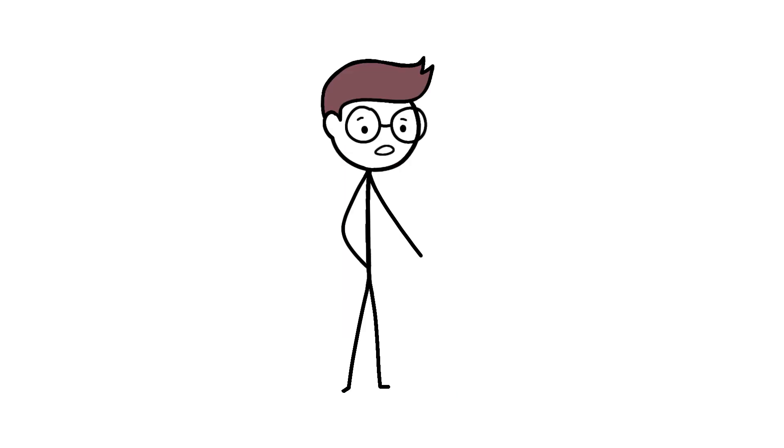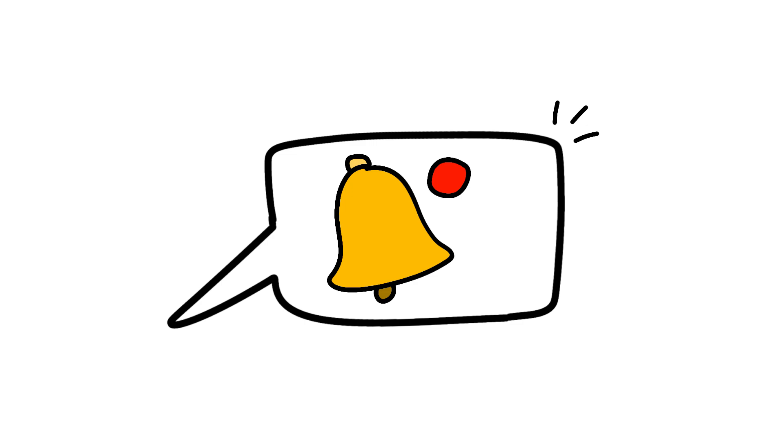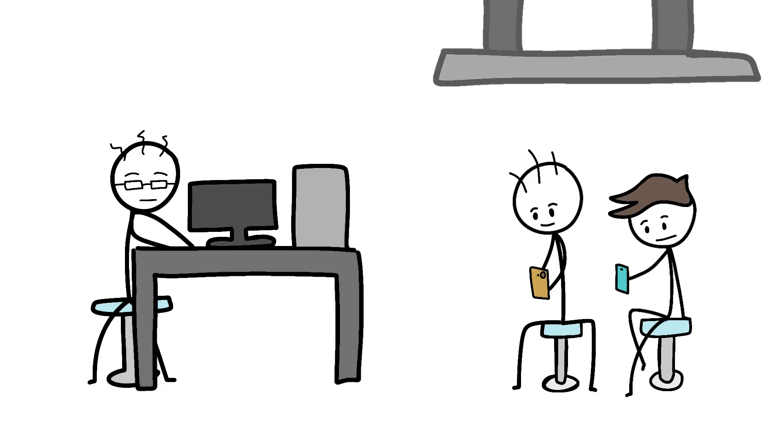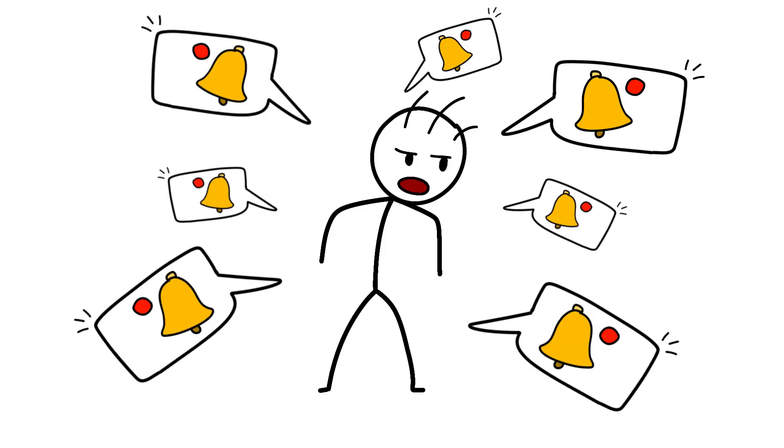This hypersensitivity extends beyond touch. Heavy smartphone users show increased activation in the auditory cortex when hearing notification sounds, even fake ones. Their brains are so primed for digital communication that they're hallucinating it into existence. One study played random beeps to teenagers while scanning their brains. Smartphone addicts' amygdalae lit up at any beep that vaguely resembled their notification sound, triggering fight-or-flight responses to phantom messages.